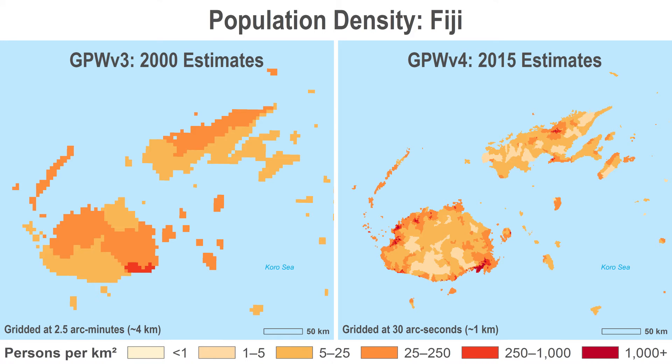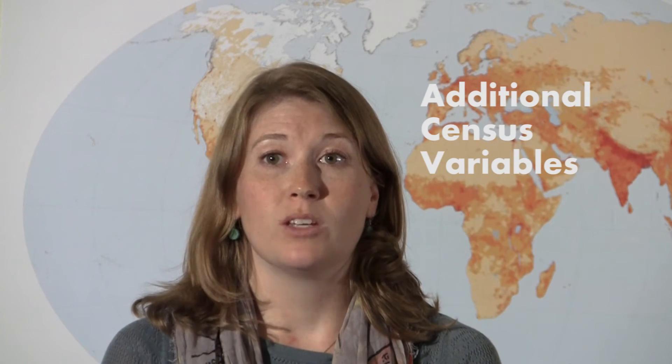Overall, 12.5 million input units are included in this fourth version of GPW. A highly anticipated addition to this version is the inclusion of gridded census variables — global grids of sex, age, and urban-rural designation.